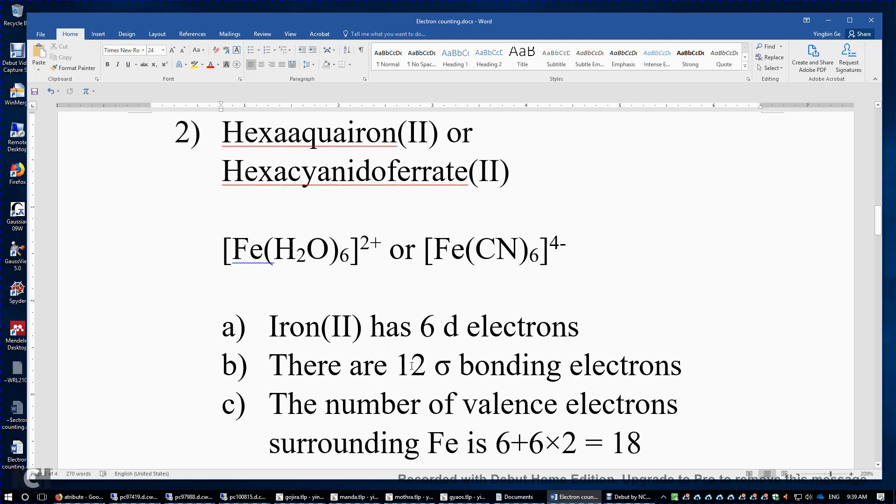And there are also 6 sigma bonds. Each bond consists of 2 electrons. So therefore, there are 12 sigma bonding electrons. 6 plus 12, you get 18 electrons.